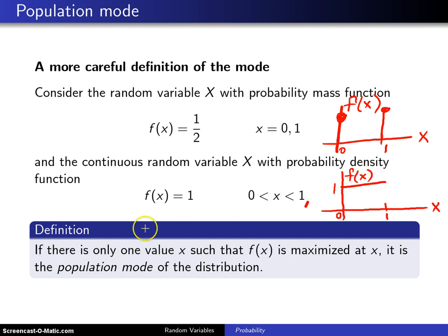All of this prompts the following definition. If there is only one value x such that f of x is maximized at x, it is the population mode of the distribution.